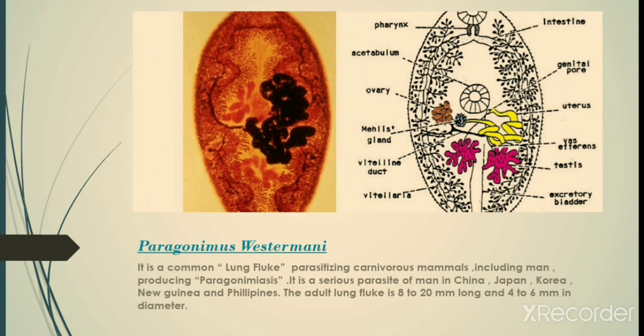Now we talk about Paragonimus westermani. It is a common lung fluke parasitizing carnivorous mammals including humans, producing Paragonimus cysts. It is a serious parasite of humans in China, Japan, Korea, and the Philippines. The adult lung fluke is 8 to 20 millimeters long and 4 to 6 millimeters in diameter.